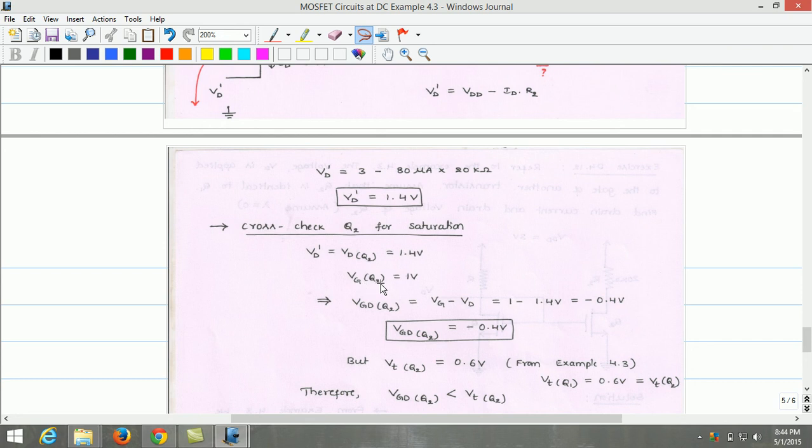Vg of Q2 equals 1 volt. This implies Vgd of Q2 is Vg minus Vd, which is 1 minus 1.4, equals minus 0.4 volts. Vgd of Q2 transistor is minus 0.4 volts. But the threshold voltage of Q2 transistor is 0.6 volts from example 4.3.